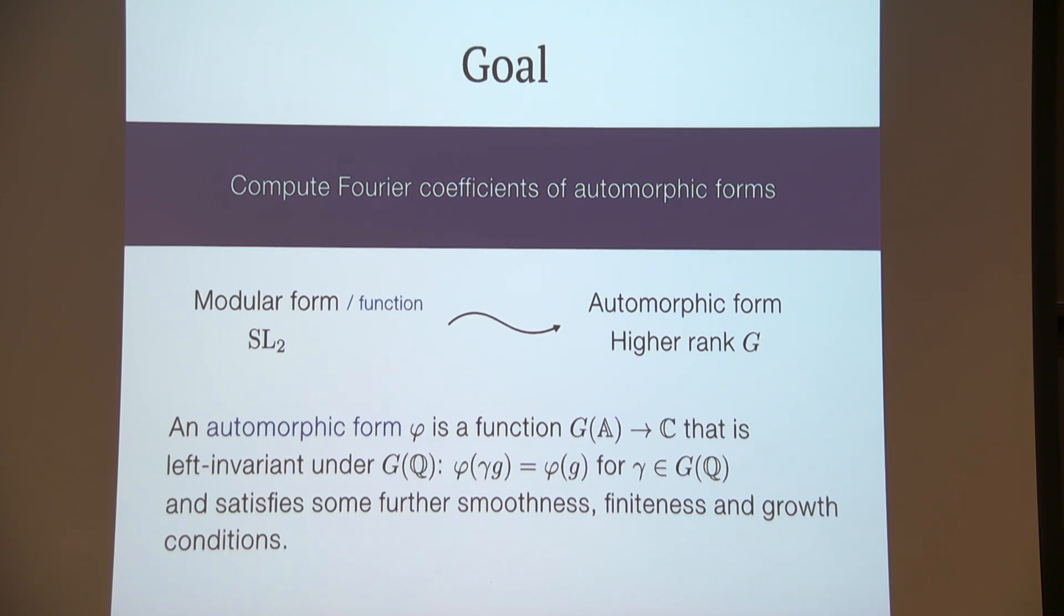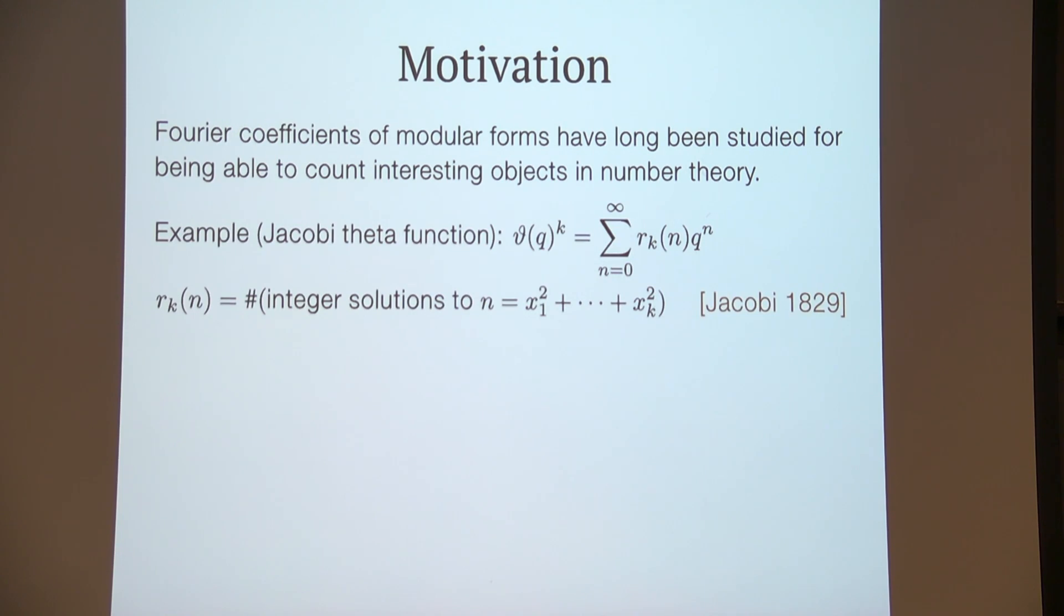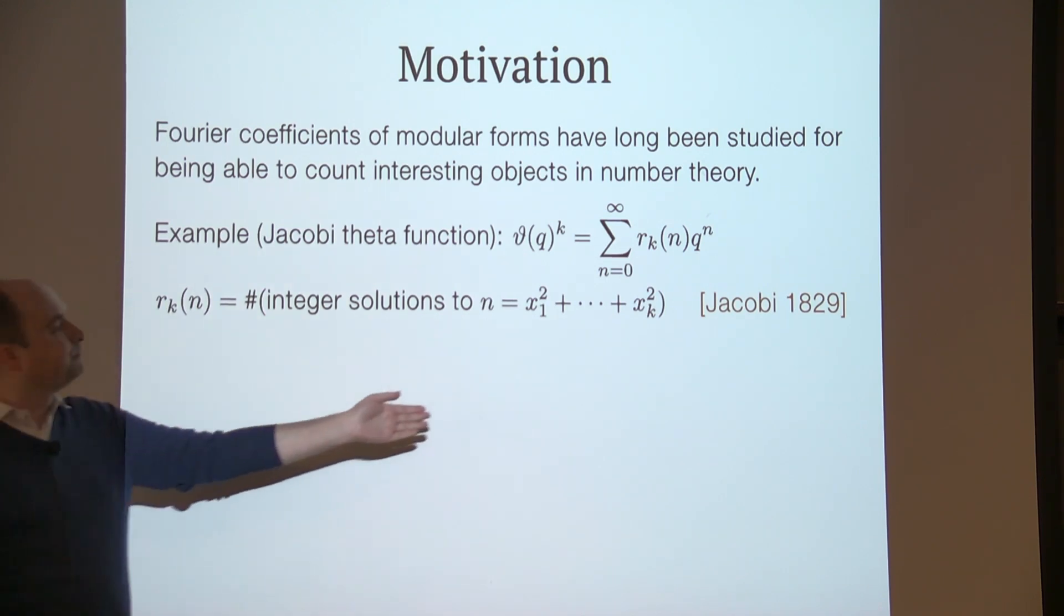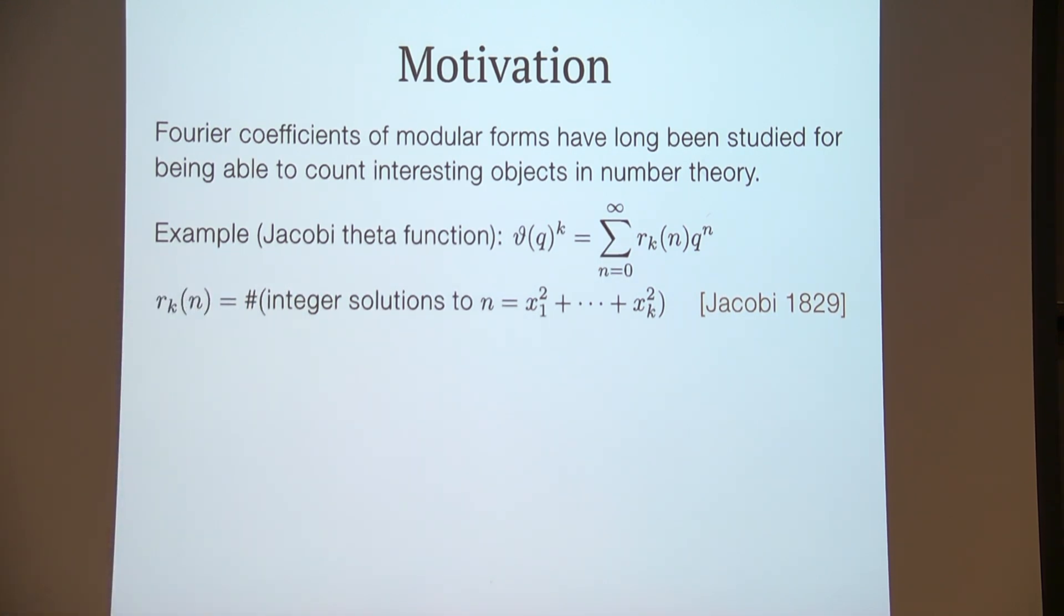So why do we want to compute these Fourier coefficients? Well, historically, Fourier coefficients of modular forms have been studied for their ability to count interesting objects in number theory. For example, we have the Jacobi theta function, or the specialization thereof. If you take it to the k-th power, it has this Fourier expansion or q-series expansion where the coefficients are these r_k, which are the number of integer solutions to this square sum equation of k terms. This was first studied in examples by Jacobi already in 1829.